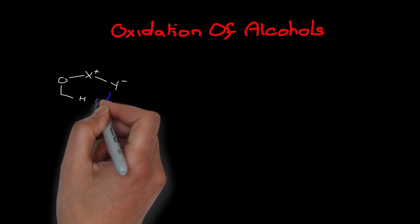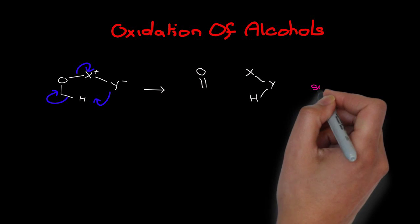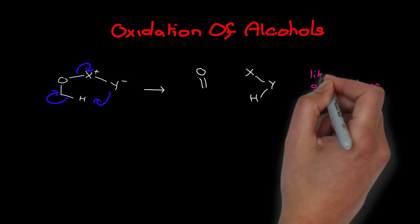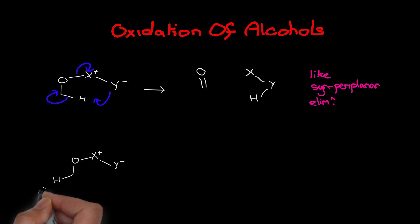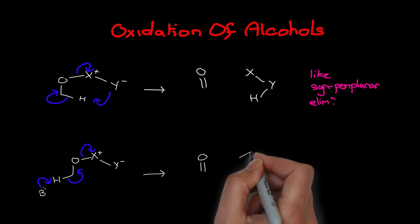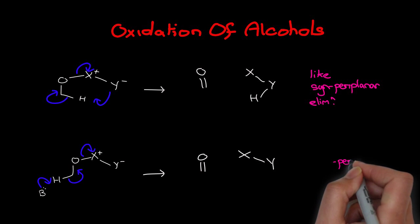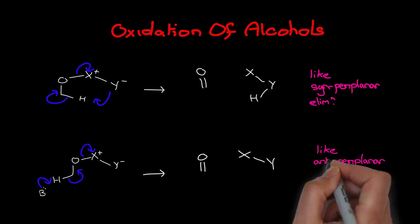That's the case for many alcohol oxidation reactions that tend to involve syn eliminations to give carbonyl compounds, like syn eliminations to give alkenes. Alternatively, the mechanism may, in some cases, proceed via an antiperiplanar-like elimination to generate a carbonyl.